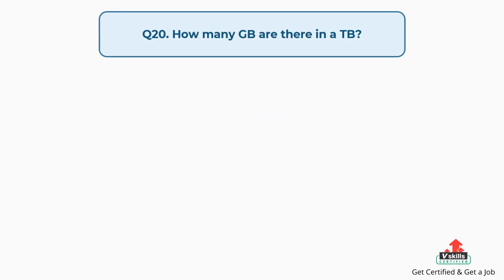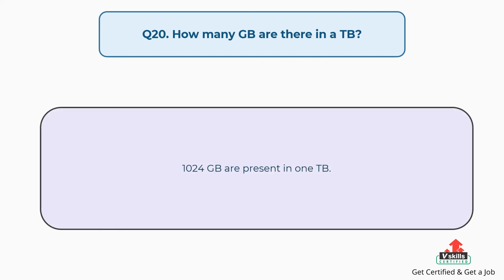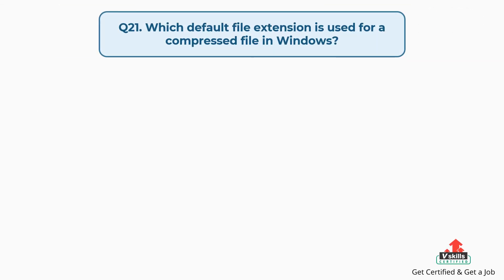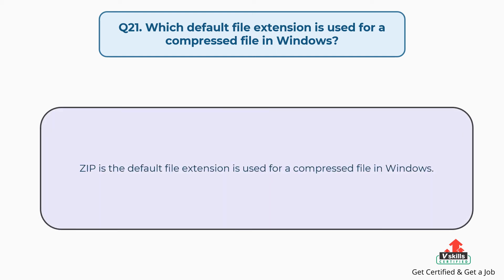Question number twenty: how many gigabytes are there in a terabyte? The answer is, 1024 gigabytes are present in 1 terabyte. Question number twenty-one: which default file extension is used for a compressed file in Windows? The answer is, ZIP is the default file extension for a compressed file in Windows.